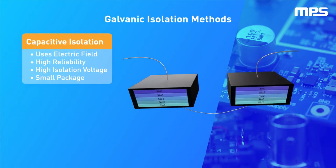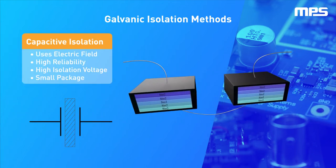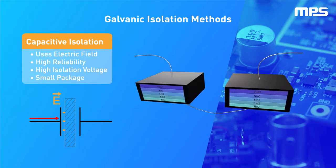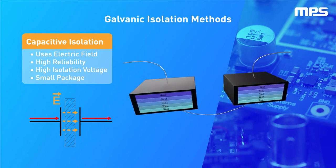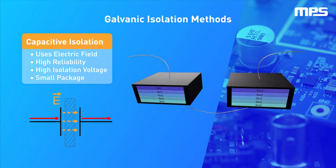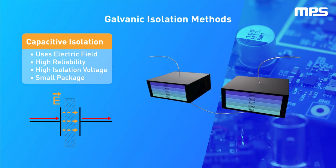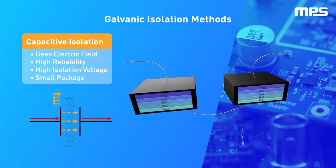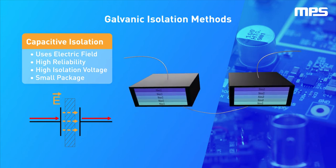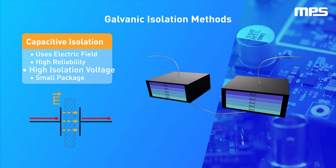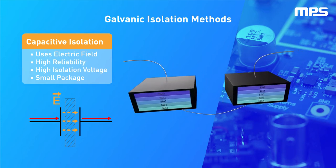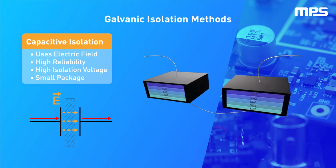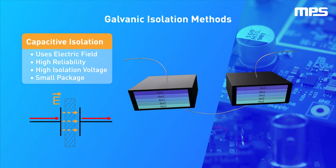The final method is capacitive isolation, which uses capacitive coupling to safely transfer information from one side to another side of the insulation barrier. Capacitive isolation offers the best performance regarding isolation voltage, reliability, and form factor. This is why MPS's isolated gate drivers use capacitive isolation.